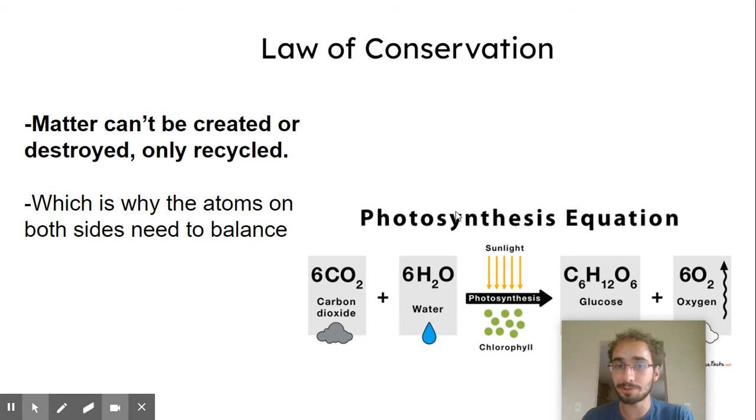So the reason why there are numbers is because of the law of conservation, where you should remember that matter can't be created or destroyed, only recycled, which is why the atoms, like the carbons or the hydrogens or oxygens, on both sides need to be balanced. So six times C is equal to C6. That's the same number of carbons, so it checks out.